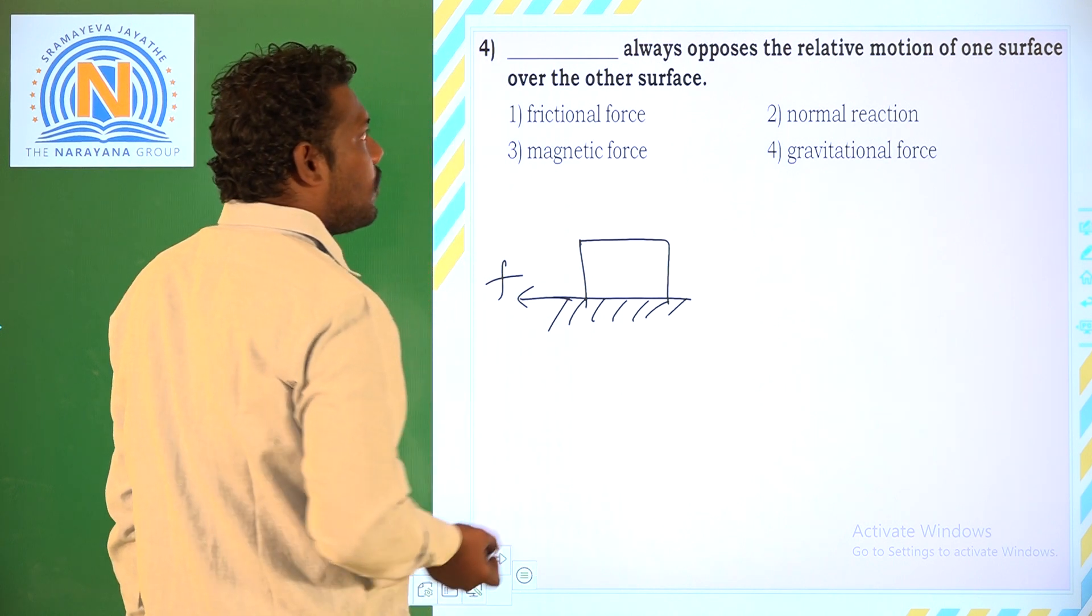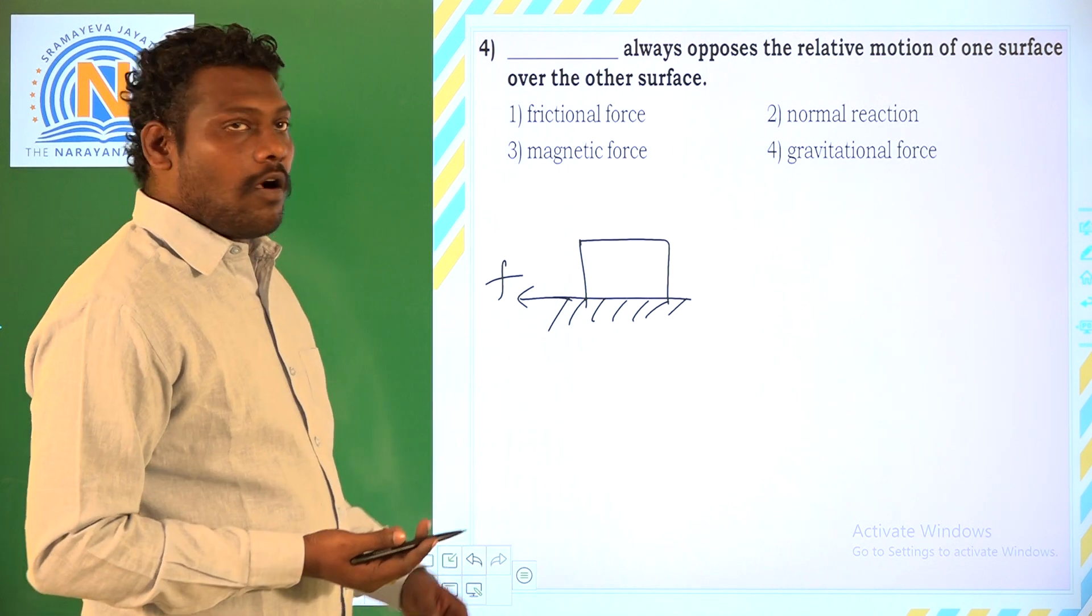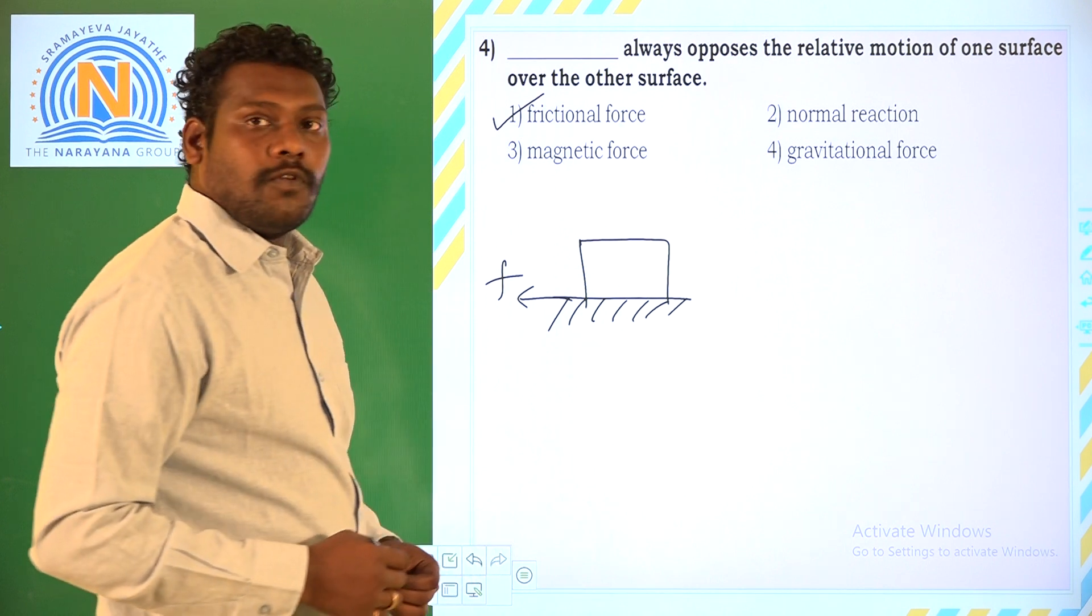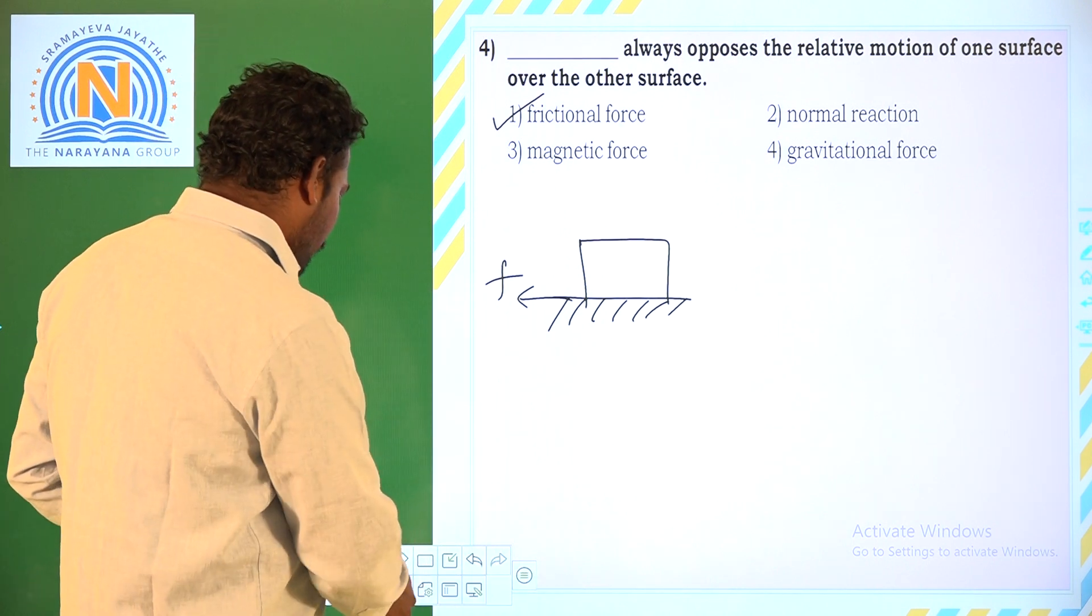Which opposes the motion, relative motion of one surface over another surface. Frictional force. Let us get into the fifth question.